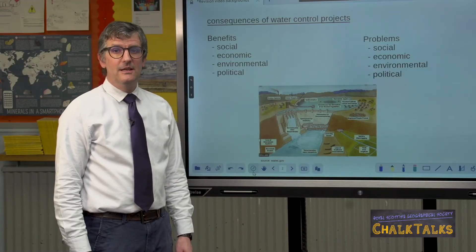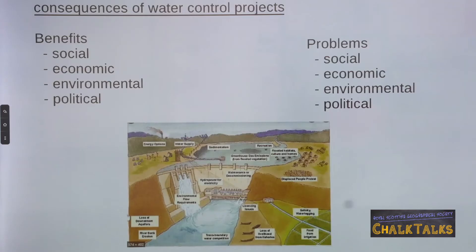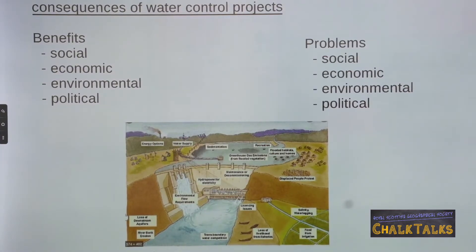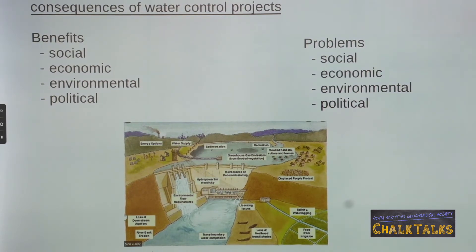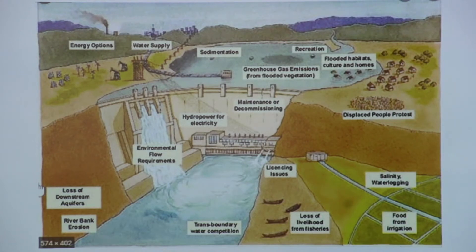One of the most common exam questions is to be asked about the consequences of a water control project you have studied. It's really important to read the question carefully — you might be asked about benefits or problems, sometimes called adverse consequences, and the question can specifically focus on social, economic, environmental or perhaps political consequences. Your answer should include named examples or statistics whenever possible, and each consequence should be expanded fully to ensure you achieve the mark. Avoid repetition of points, even though each consequence might fit into any of the categories depending on how you word it. This question can ask for up to 12 marks, so you need to be able to cover several points in the same detail.